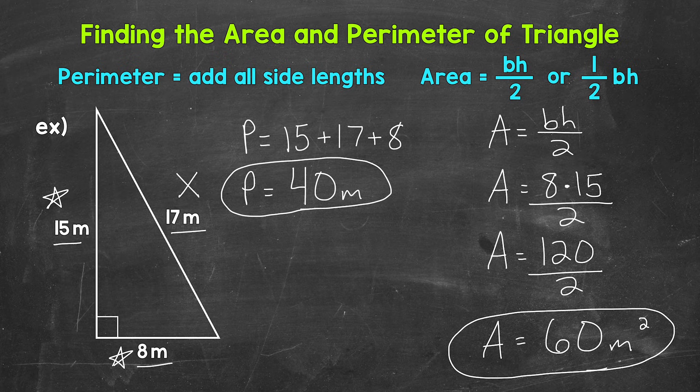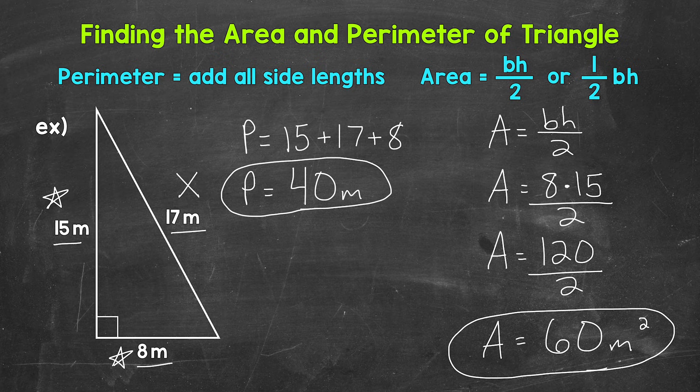So for that right triangle, we have a perimeter of 40 meters and an area of 60 square meters.